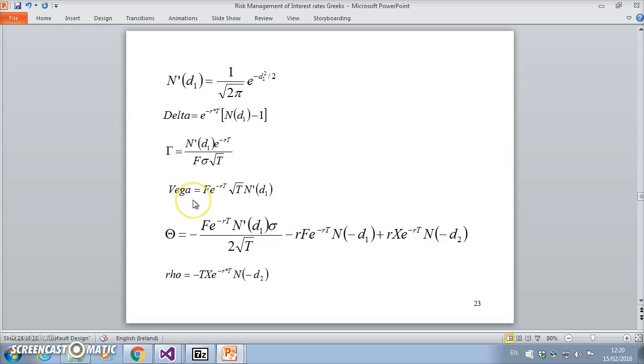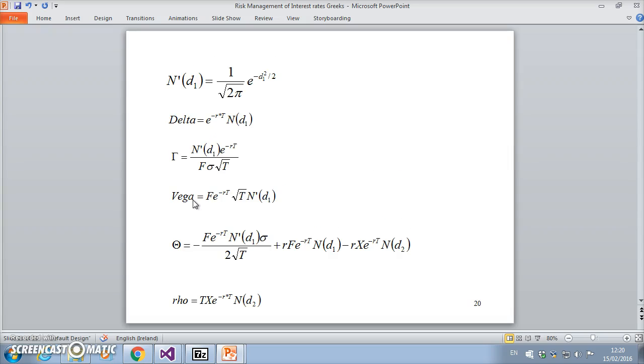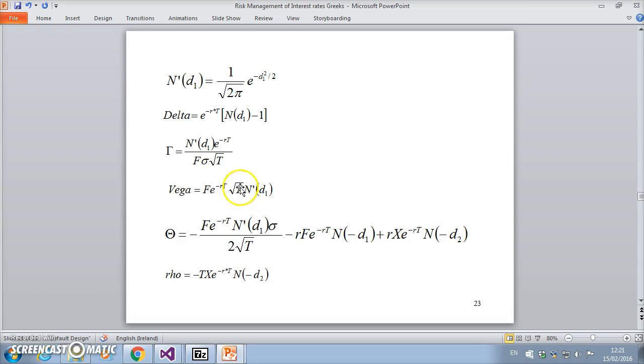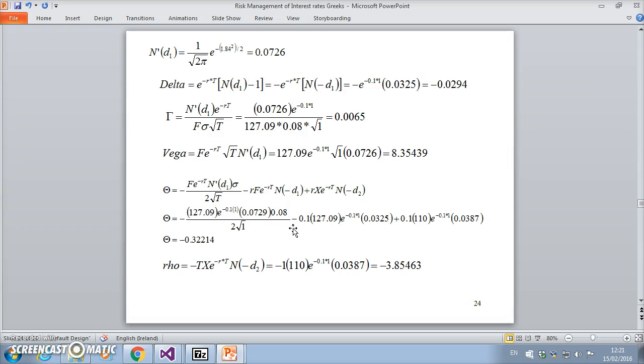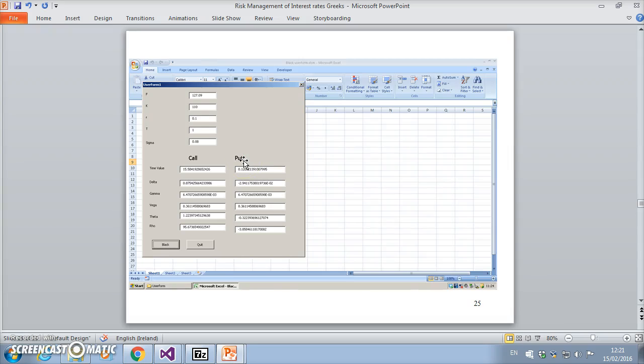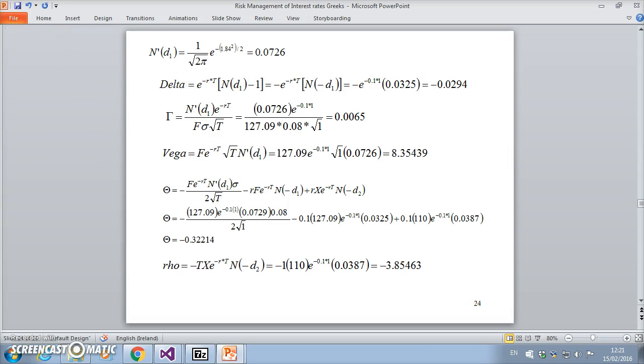Notice that the gamma and vega for the put are the same as the gamma and vega for the call. But theta is different, rho is different. When we input the parameter estimates F, K, r, T, sigma, we get different delta, different theta, different rho, but the same gamma, same vega.